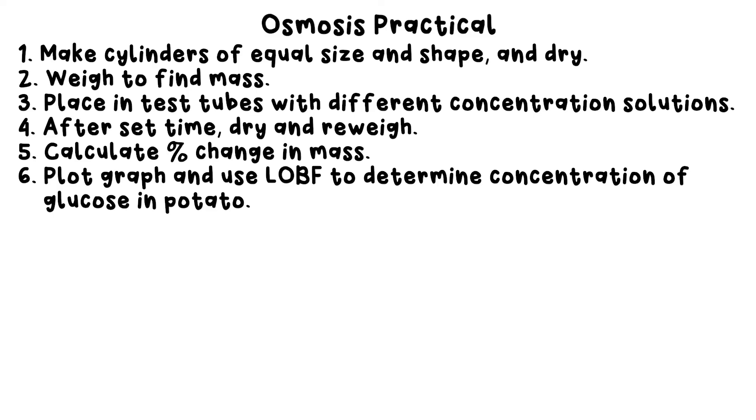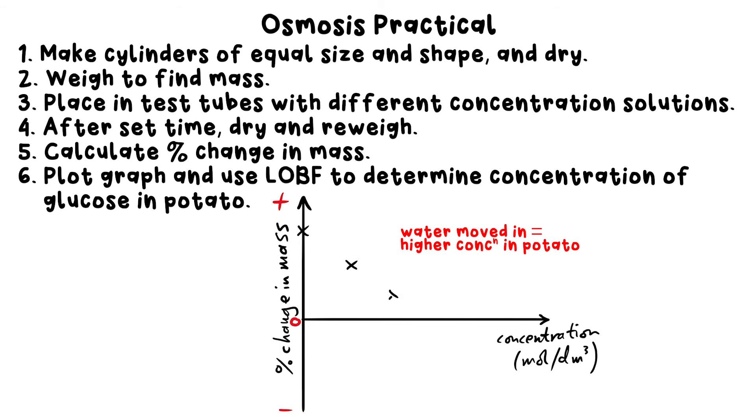Step 6: Plot a graph of percentage change in mass against concentration of solution. If a cylinder increased in mass, that's a positive change, above zero—water must have moved into the cells to balance a higher concentration of glucose than the solution it was in. If it's a negative change in mass, water's moved out, so that must mean the concentration was higher outside of the cells.